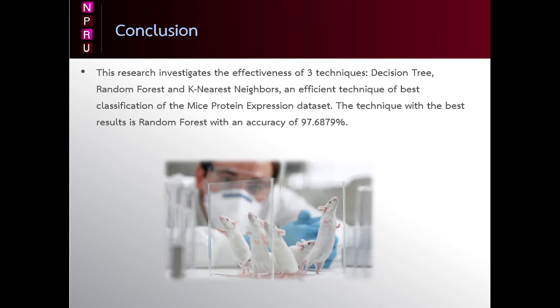Conclusion: This research aims to study and compare the efficiency of classification techniques for mice protein expression data. The data are classified as 8 classes. We use 3 data mining algorithms including decision tree, random forest, and KNN. And we found that random forest gives the best accuracy in the experiment. This is my presentation. Please send me your questions or comments you have, and I will reply to you as soon as possible. Thank you for listening.